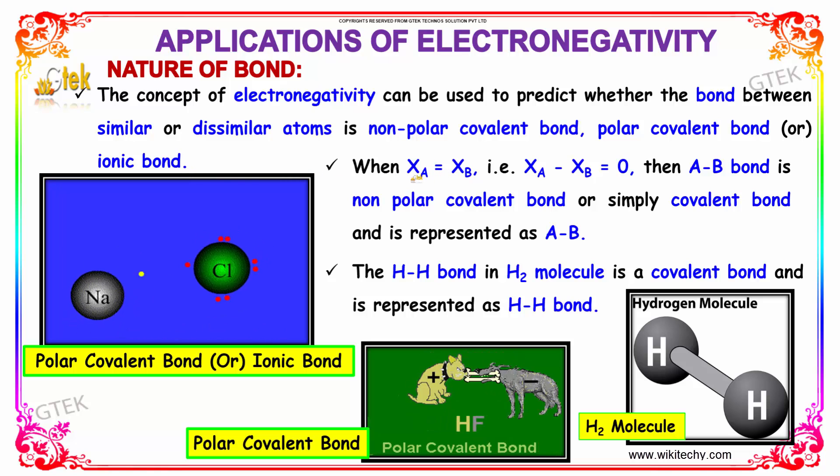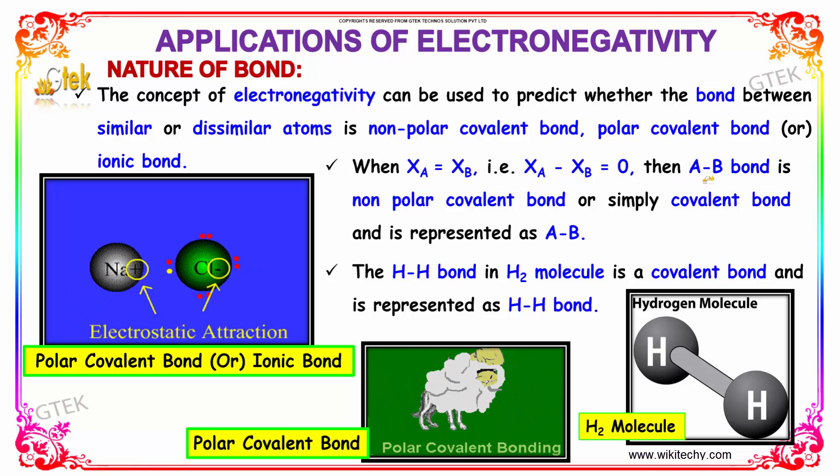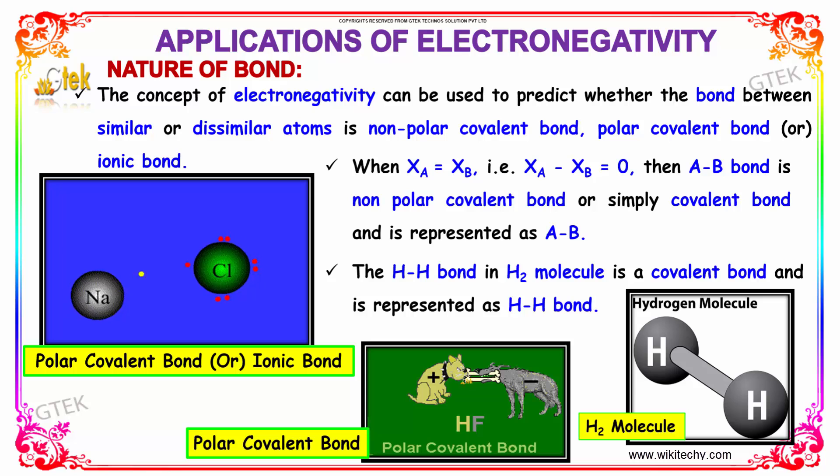When xA equals xB, that is xA minus xB equals zero, then the AB bond is a non-polar covalent bond or simply a covalent bond and it is represented as AB. You can see it here. The hydrogen-hydrogen bond in H2 molecule is a covalent bond and it is represented as HH bond.